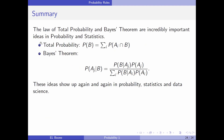Here's a quick summary: the law of total probability is given by this formula, and Bayes' theorem is given by this formula. These ideas show up again and again in probability, statistics, and data science. Bayes' theorem shows up in a bunch of methods called Bayesian methods, and if you're interested in Bayesian methods, this formula — Bayes' theorem — is the key to doing that.